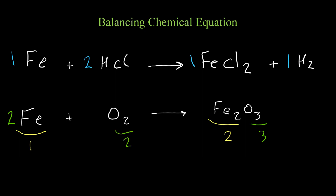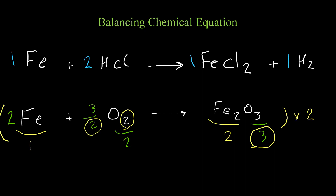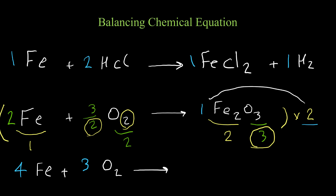On the right side we have three oxygen and on the left side we have two oxygen. To find the coefficient for oxygen we divide three by two, giving three over two. We cannot use fractional coefficients, so we multiply the whole equation by the denominator, which is two. That gives us: two times two is four iron on the left, two times three-over-two is three for oxygen, and two times one is two iron(III) oxide.